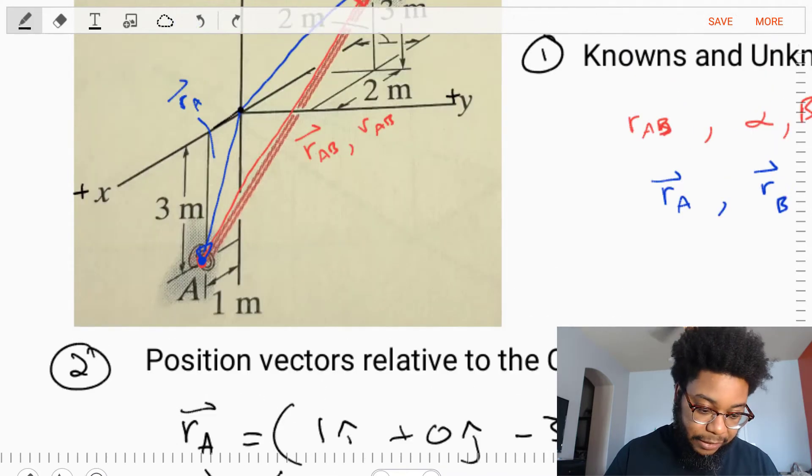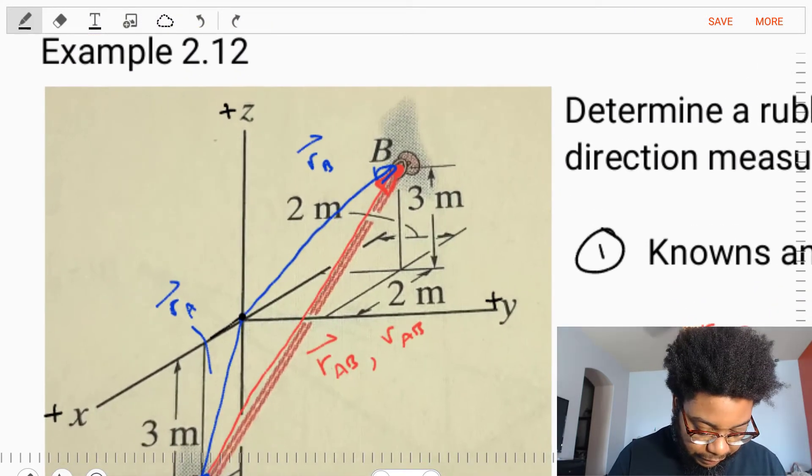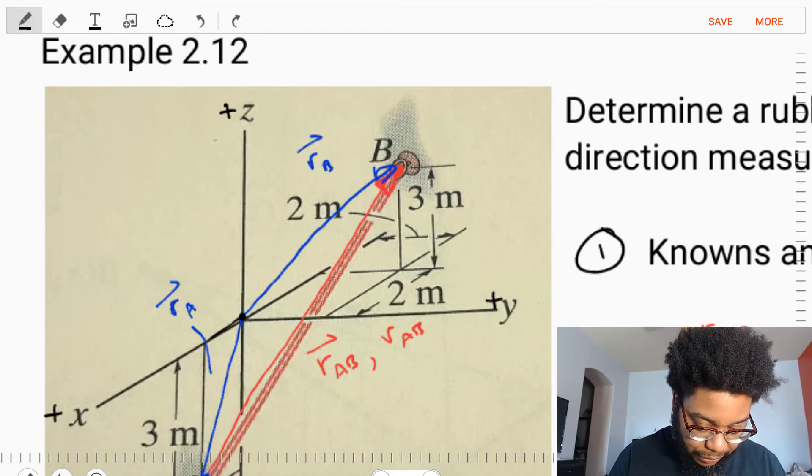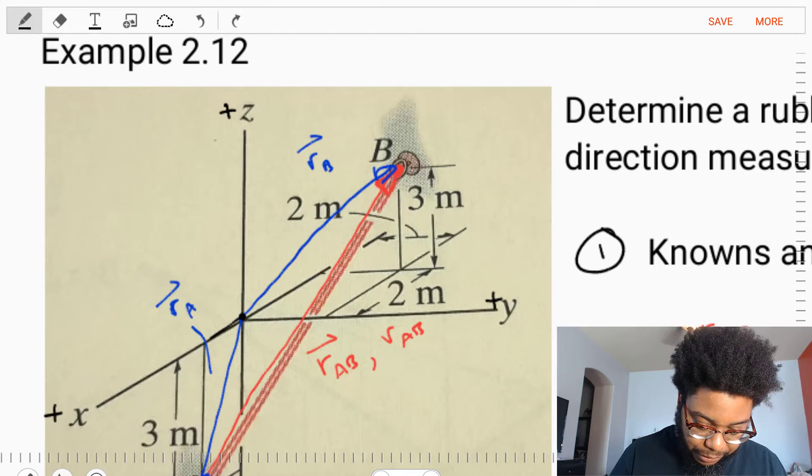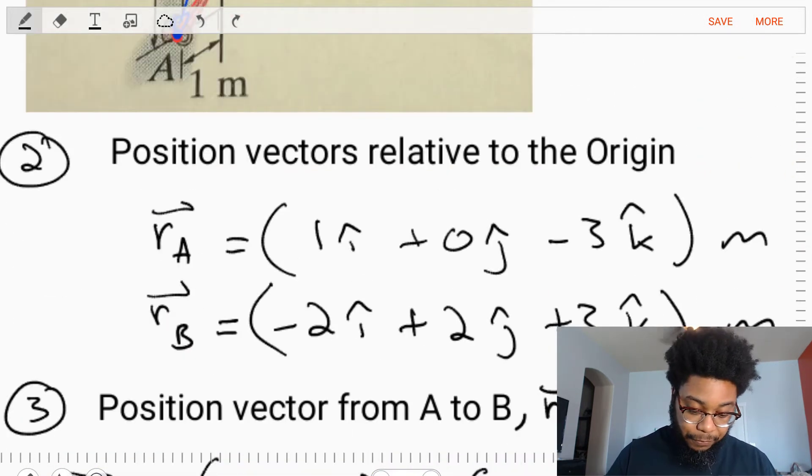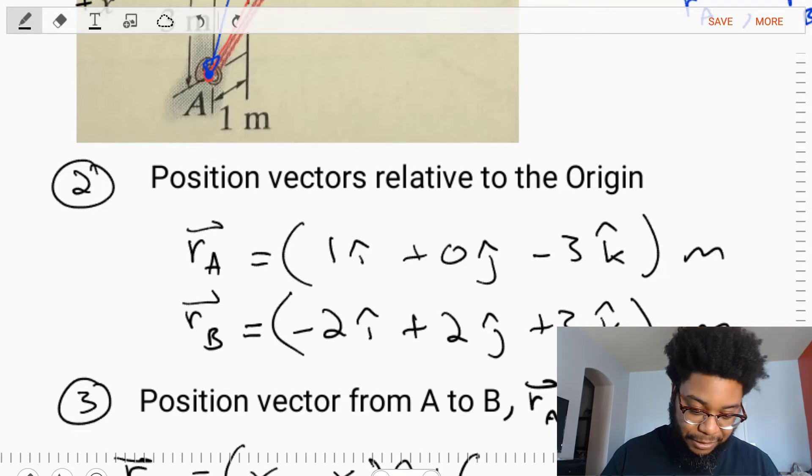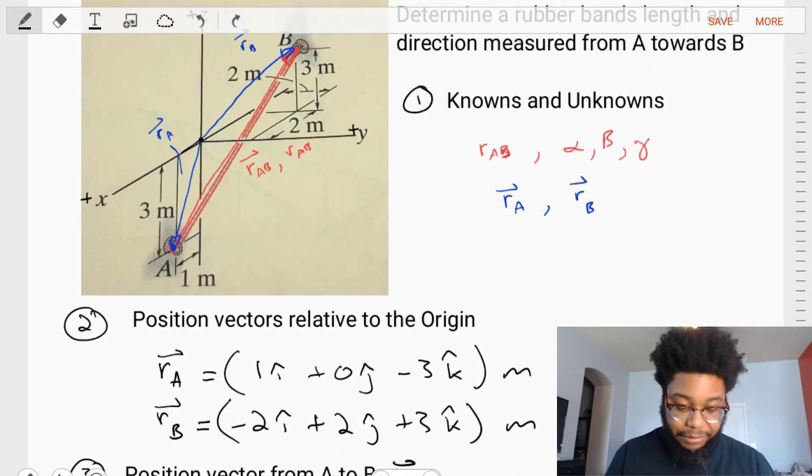If we repeat that process for RB, we can see that RB is negative in the x axis, it moves back by two. On the y axis, it moves out or positive by two. On the z axis, it moves positive by three. We find our RB vector is negative two i plus two j plus three k meters.